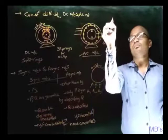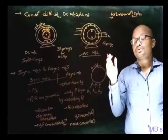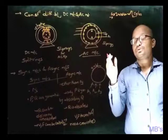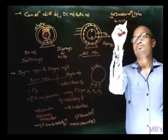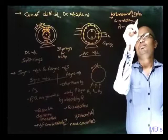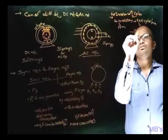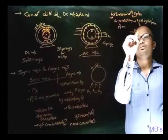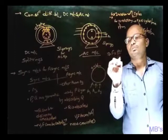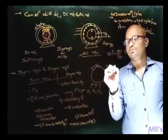Frequency equation: for one rotation, P/2 cycles are produced. For N rotations per minute, that gives (P/2)×N cycles per minute, which converts to (P×N)/120 cycles per second. Therefore, f = PN/120 Hz. This is the frequency equation relating the number of poles P, rotational speed N (in RPM), and frequency f.